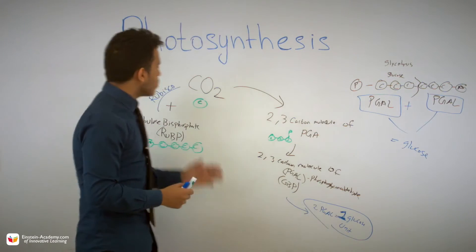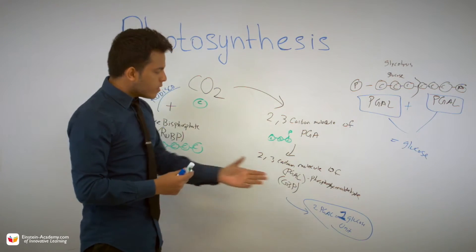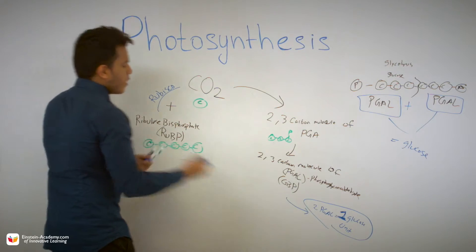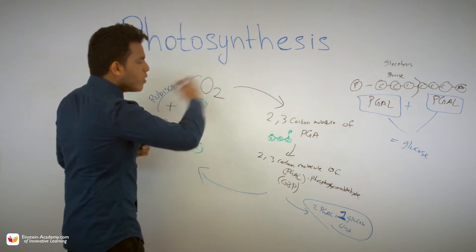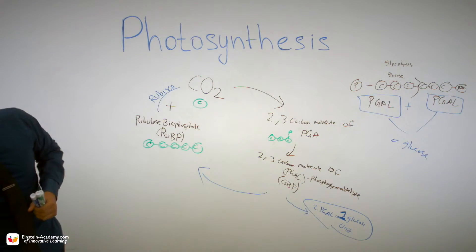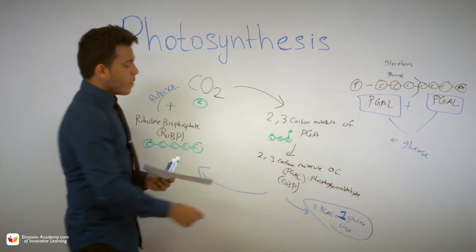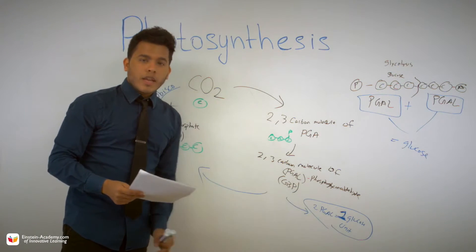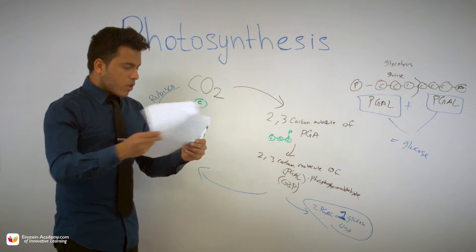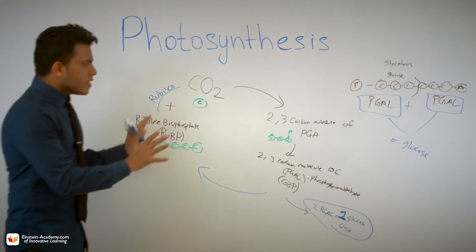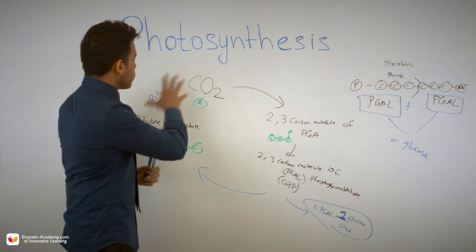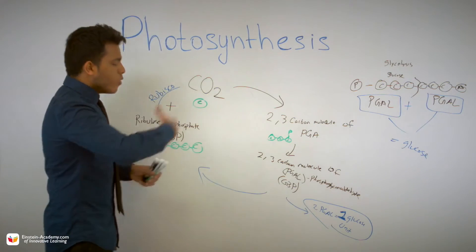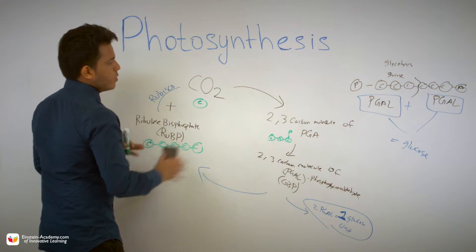This is exactly how we make glucose. In the Calvin cycle, the cycle keeps going until we accumulate enough PGALs to generate glucose — two PGALs equal one glucose unit. The rest of the PGALs continue the cycle. PGA stands for phosphoglycerate; you strongly need to memorize PGAL. That's the Calvin cycle summary: RUBP plus CO2 via Rubisco generates two three-carbon PGA molecules, converted to PGAL, and two PGALs produce one glucose unit.